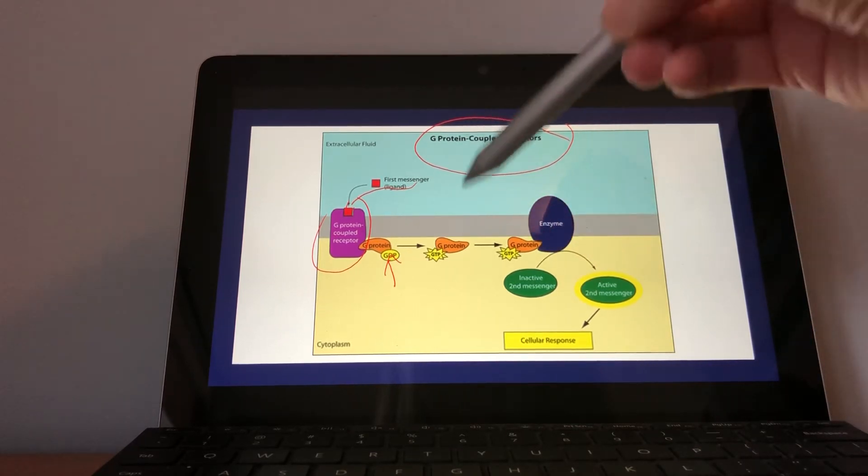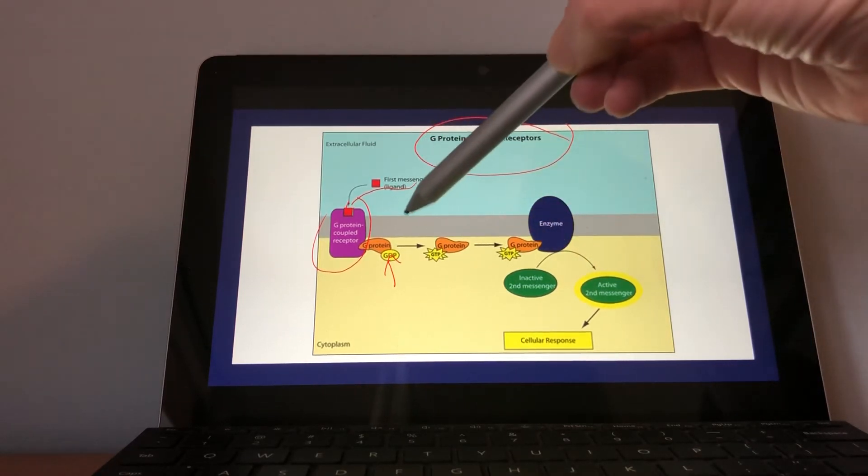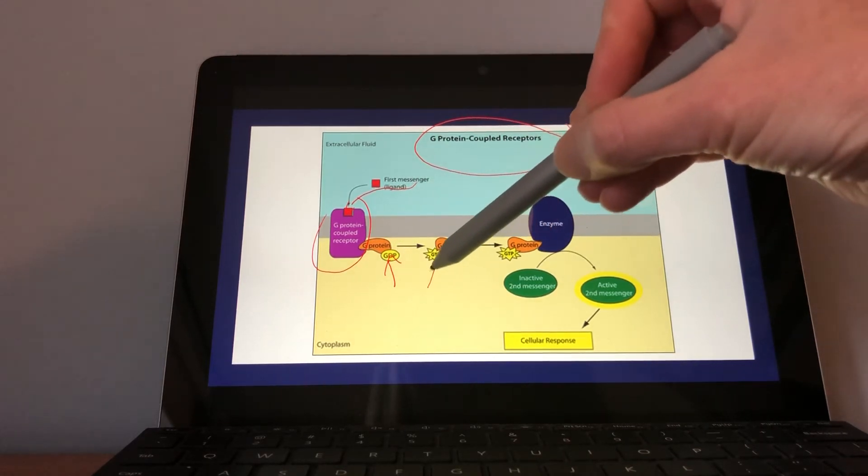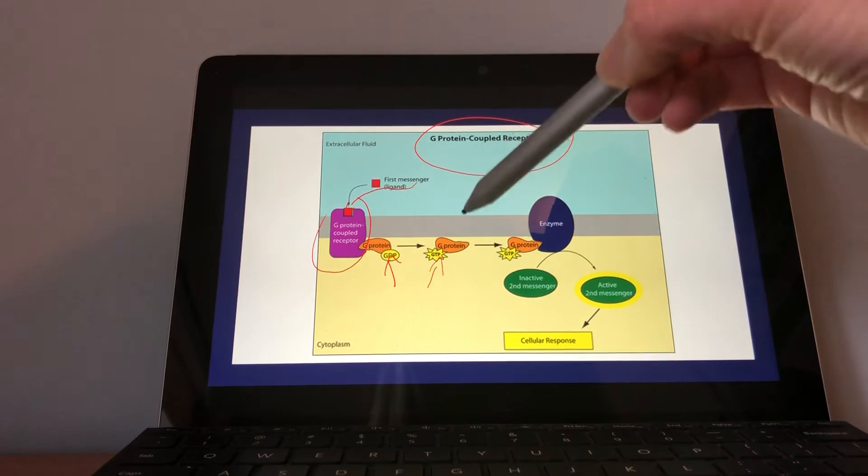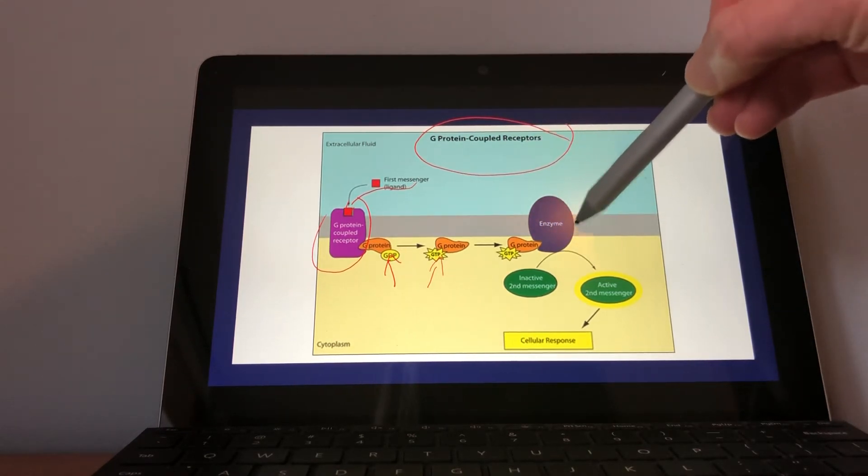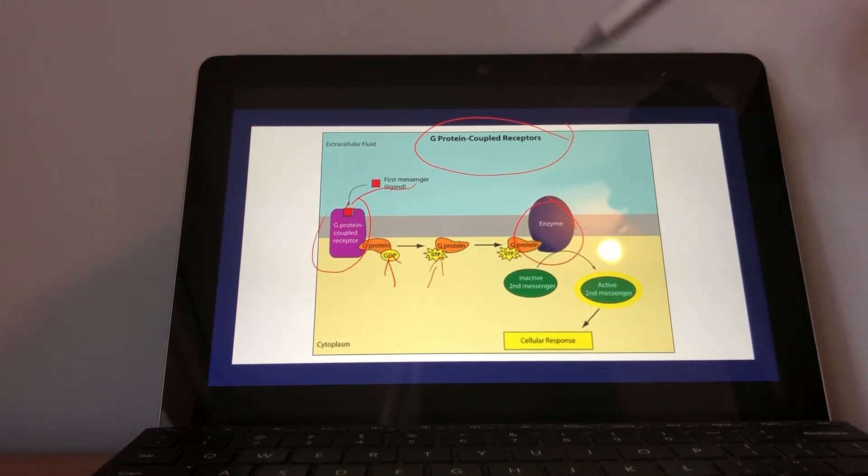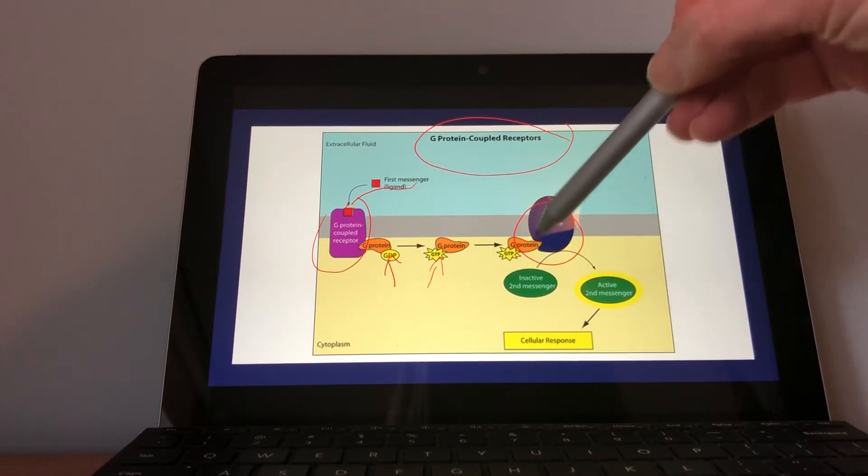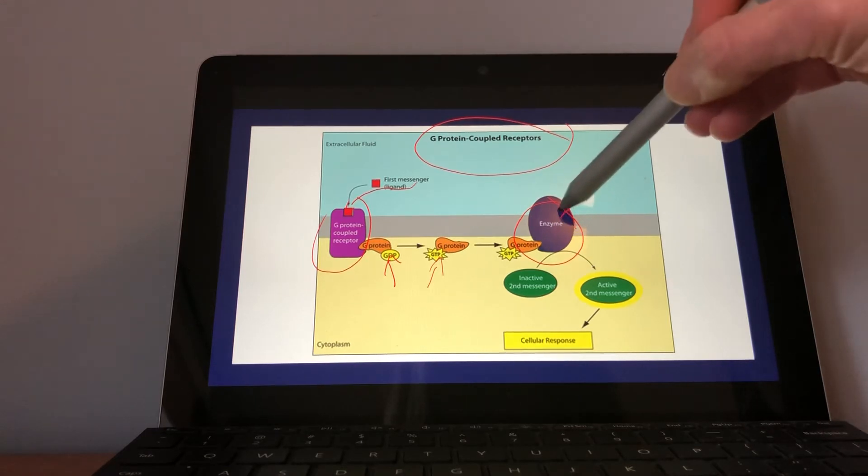So here we see it again. So the GDP then you get a phosphate group added here to make it GTP. Once that GTP is present, it could potentially now, again this is actually not just one example, there's different ways of things, but for example in this scenario, this G-protein now with the GTP is going to activate this enzyme, and then the enzyme is in turn going to activate a messenger, and then that will produce some sort of cellular response.